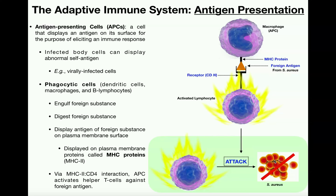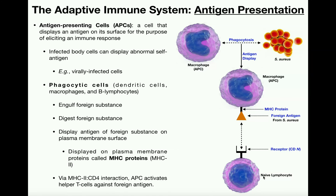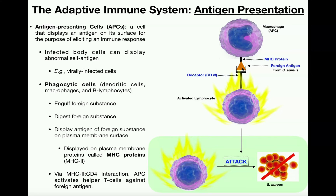There are multiple ways we can destroy a pathogen. But in order to do that, we can't have naive lymphocytes — they're naive, they haven't seen the antigen yet. They have to be activated first before they know which antigen to attack. But once they're sensitized and activated, they'll go and do whatever they need to against that pathogen.